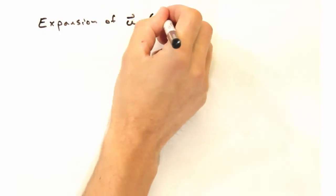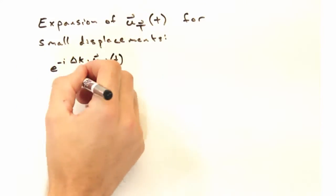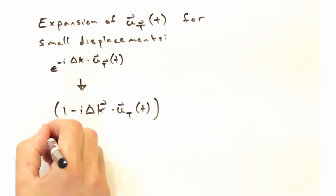We can expand this u of t term for small displacements in the following way, where we take the exponential and expand it out in this 1 minus i delta k dot t term.